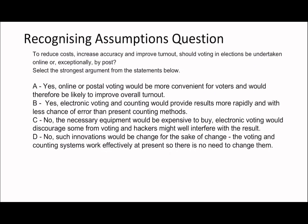Here's the next question — pause the video and have a go. There is more than one clause here, so watch out for that. The question is: 'Should voting in elections be undertaken online or exceptionally by post, to reduce costs, increase accuracy, and improve turnout?' The clauses are 'to reduce costs, increase accuracy, and improve turnout.' Importantly, we're looking for an answer that mentions cost, accuracy, and turnout. We know this is the right clause because if you remove it, the rest of the question still makes sense.